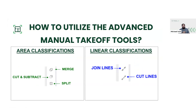Merge will allow us to add on additional square footage. Cut and subtract allows us to subtract out or cut out the space within an existing area classification. Split allows us to just basically take a knife and split a polygon in half. For linear classifications, we have join line and cut lines. Join lines allow us to join two points together to extend a line — making it from two individual segments to one large segment. Cut lines is the reverse operation, where we take one long line at a point in the middle and cut it to be two individual lines.